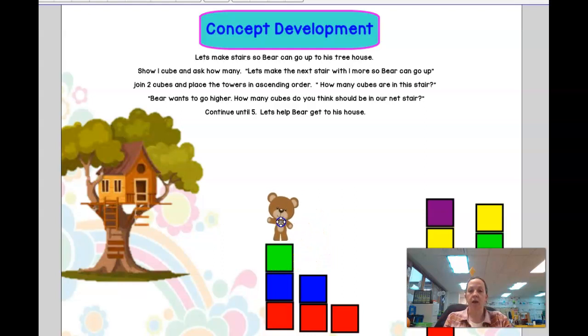So now we are going to add the green cube. Let's take the bear up and see if we made it. Not enough yet. We have three cubes. We need to add one more.